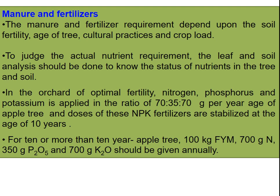Manures and fertilizer requirements depend upon soil fertility, age of the tree, cultural practices, and crop load. To judge actual nutrient requirements, leaf and soil analysis should be done. In orchards of optimal fertility, nitrogen, phosphorus, and potassium are applied at the ratio of 70:35:70 grams per year per age of the tree. Doses of P and K fertilizers are stabilized at the age of 30 years.